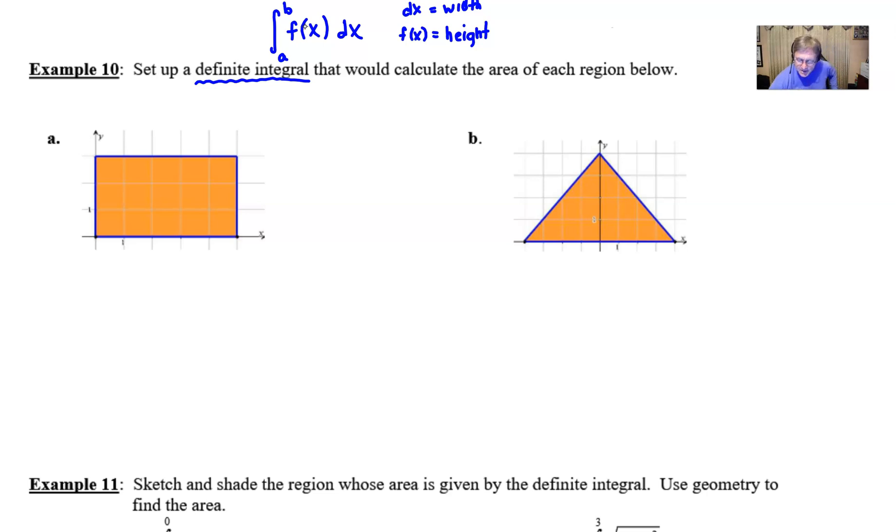We're going to talk a lot more about that later, but all I want you to do for problems like number 10 is to figure out what is the function that would be the very top of the shaded region. If you look at problem A here, which has this rectangular section shaded, the top of it would consist of all of this piece here. This purple pen is highlighting what that top function is. It's a horizontal line with the equation y equals 3, or f of x equals 3.